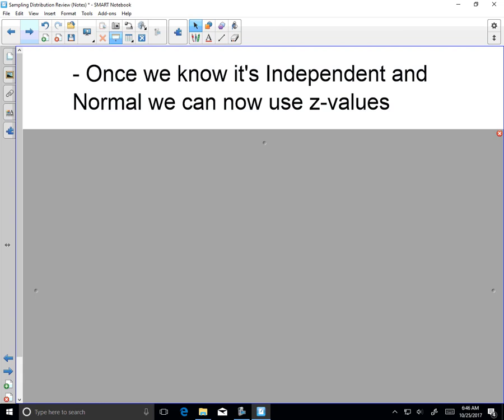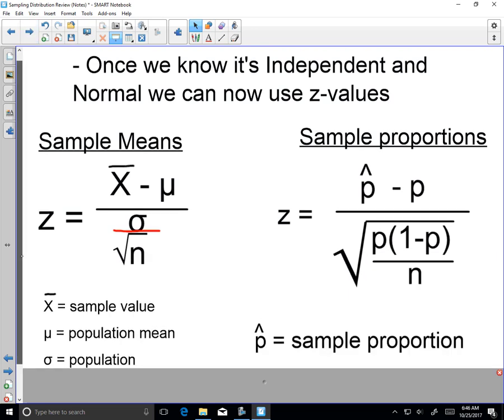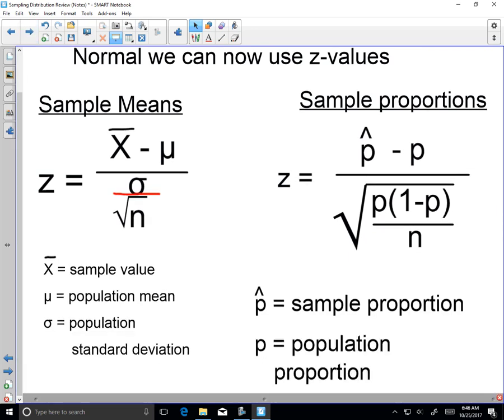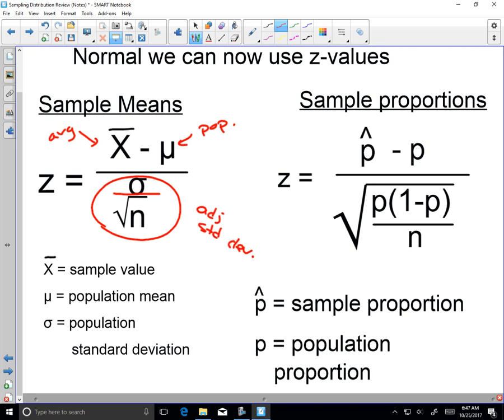Remember what a z-value is. Given minus average divided by standard deviation. And what we have to do is we just have to make a small adjustment for standard deviation based on sample size. So everything else is the same. Here's your given average from your sample data. Here's the population average given to you in the problem. And then we have to find our adjusted standard deviation.